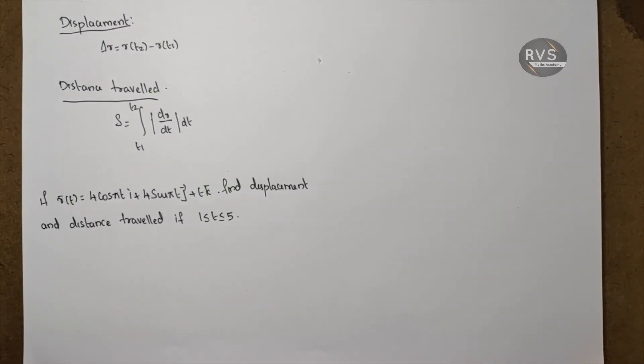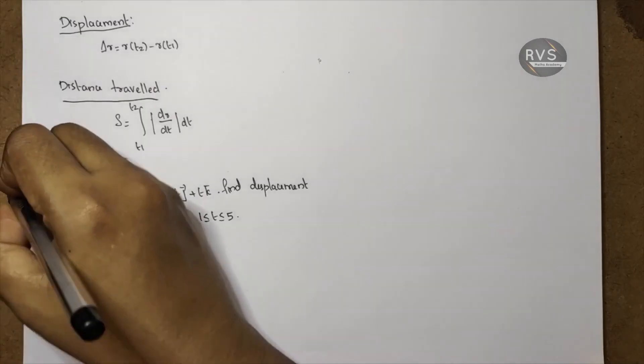The first question: if r(t) = 4cos(πt)i + 4sin(πt)j + tk, find the displacement and distance traveled for 1 ≤ t ≤ 5.